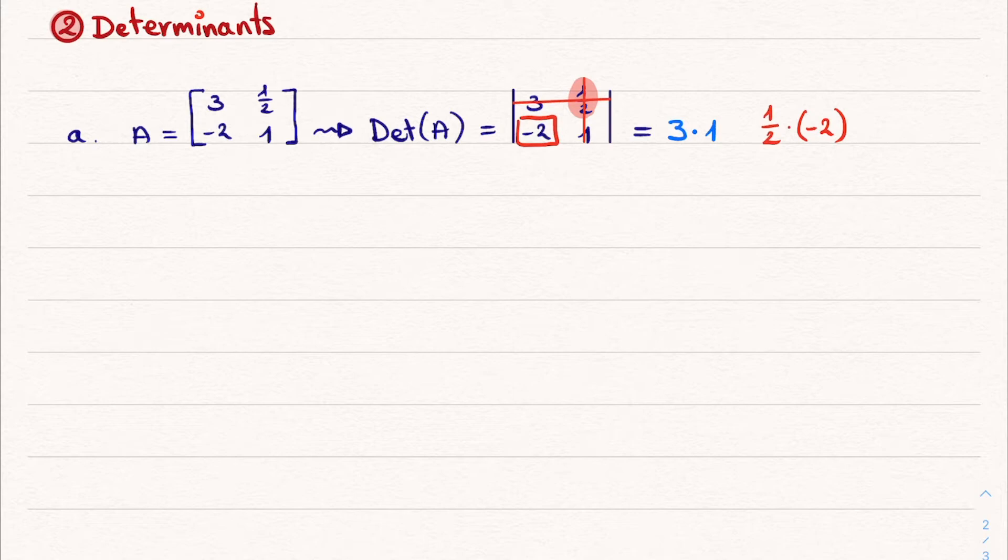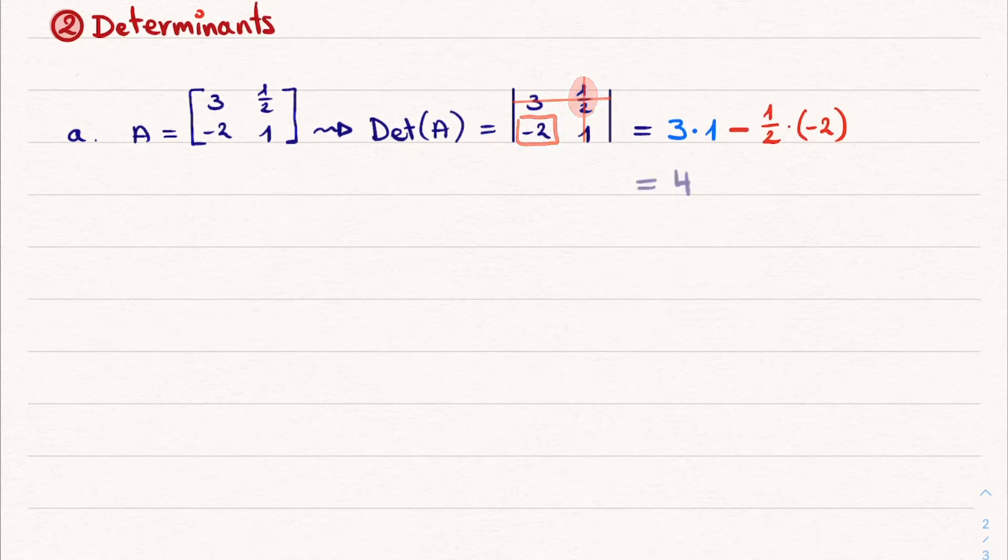However, the thing to remember here is to include a minus sign. Then the resulting determinant is simply 4. A shortcut that is only applicable to 2 by 2 matrices is to simply multiply the diagonal elements and subtract from that the product of the off-diagonal elements. And this shortcut will save you a lot of time later on.